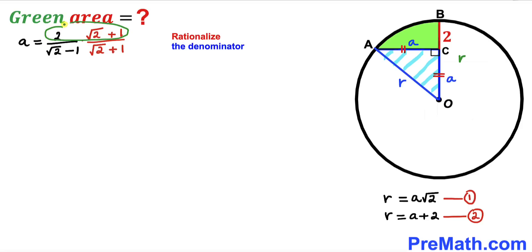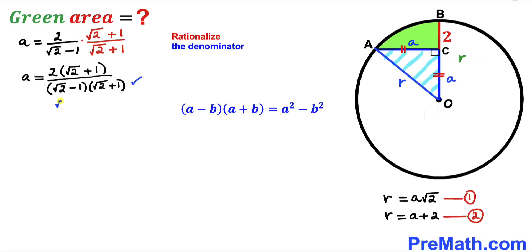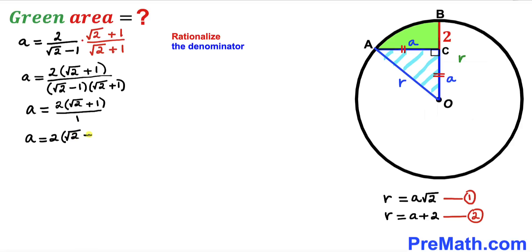Multiplying numerators and denominators, and applying the identity (a − b)(a + b) = a² − b², the denominator becomes (√2)² − 1² = 2 − 1 = 1. So the denominator equals 1, and therefore lowercase a = 2(√2 + 1).